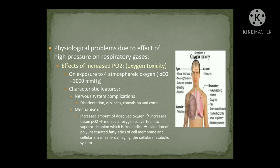The effects of increased PO2 are known as oxygen toxicity. When a person is exposed to high atmospheric pressure — for example, 3 to 4 atmospheric pressure at 25 to 30 meters depth — oxygen toxicity occurs. It is characterized by nervous system complications: disorientation, dizziness, convulsions, and if untreated, the person will go into a coma.